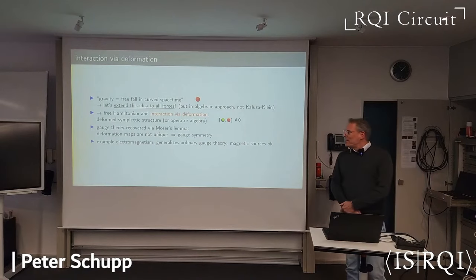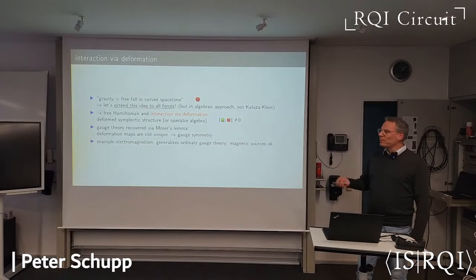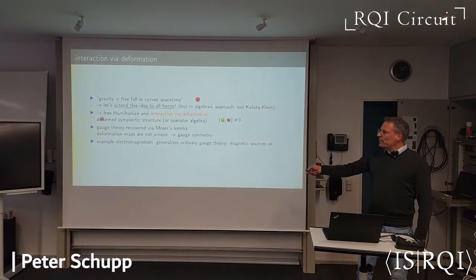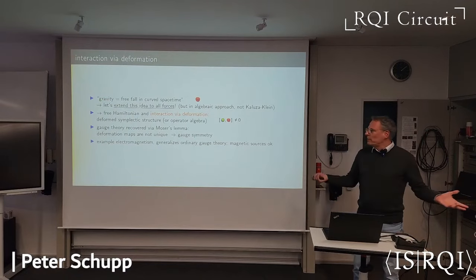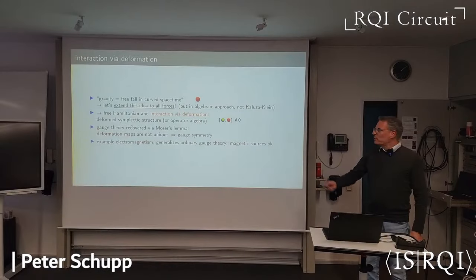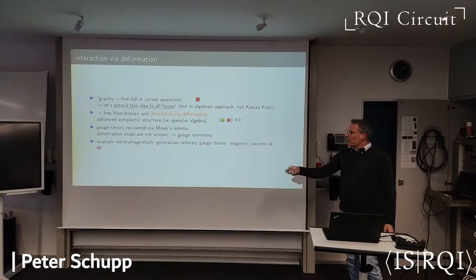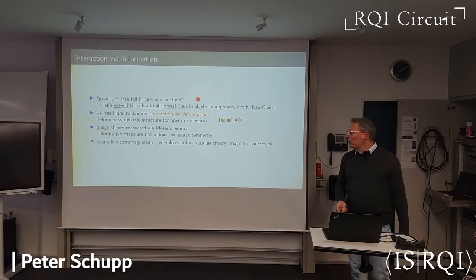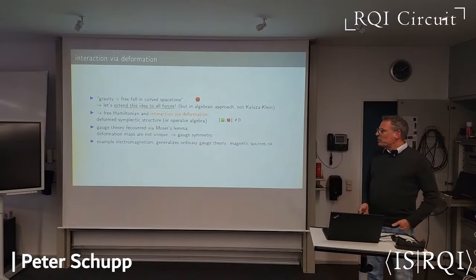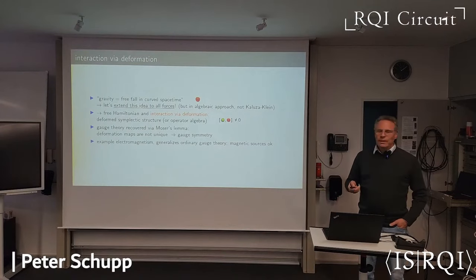So this is going to be an algebraic alternative to freefall, to minimal coupling, covariant derivatives, and gauge theory, but very closely related. So here's the idea. Gravity equals freefall in curved spacetime. Let's extend this idea to all the forces, not just gravity, but not using Kaluza-Klein, instead using algebra. So the rules of the game will be to use free Hamiltonians for everything, freefall, and introduce interactions by the deformation of a quantum algebra. Classically, we deform symplectic structure. Quantum mechanically, we would deform the quantum algebra. Ordinary gauge theory and the ideas of general relativity are recovered via Moser's lemma. I will not go into too much detail here. The deforming maps that deform the algebraic symplectic structures are not unique, and this non-uniqueness takes the place of gauge symmetries. It's more general than gauge symmetry.